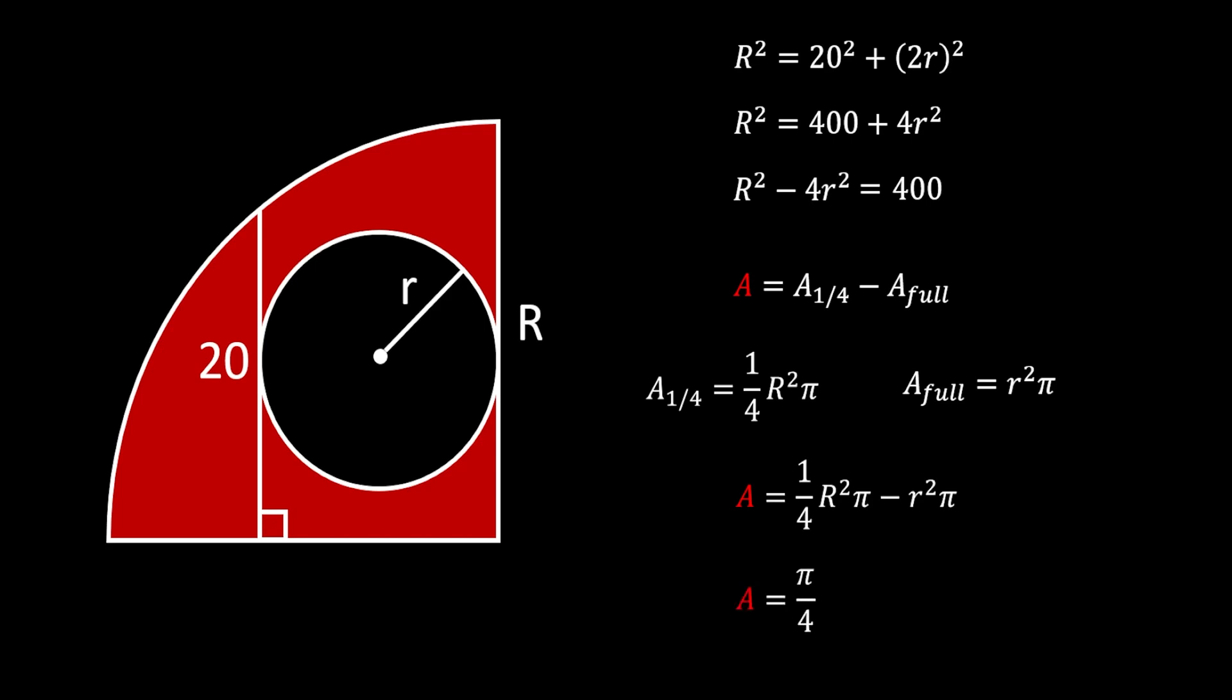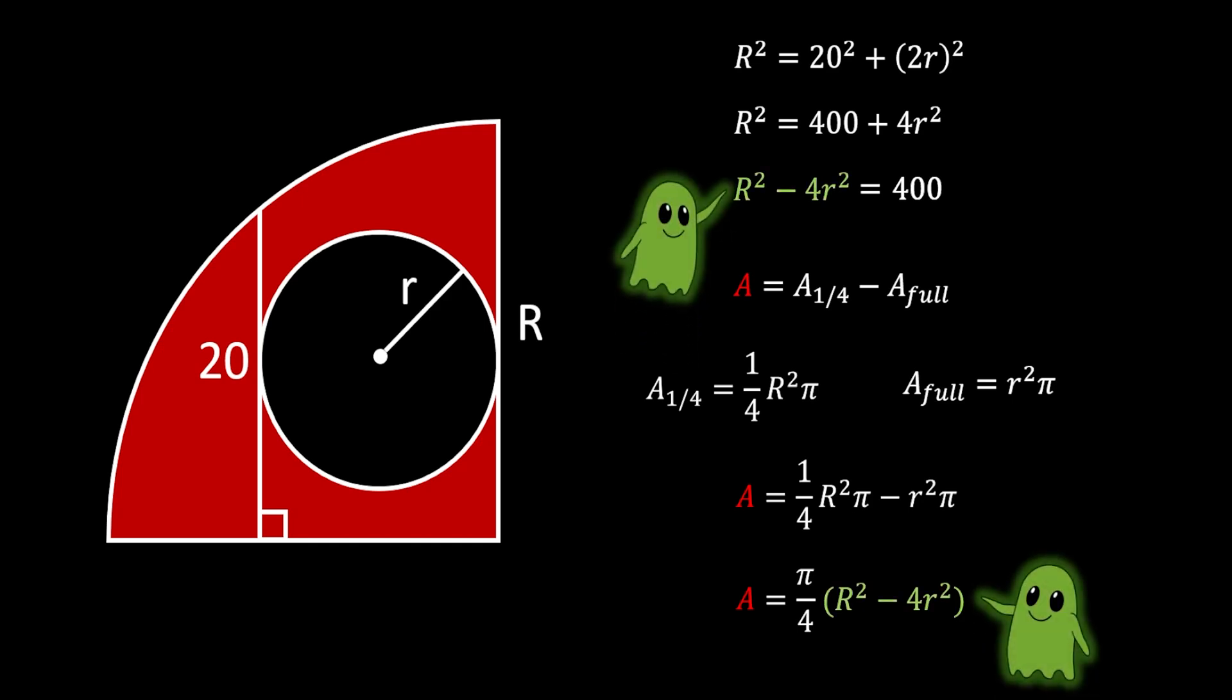Now we can take pi over 4 as a common factor and we will be left with big R squared minus 4 small r squared. But if you noticed we already got this section in our line number three and the value for this section is 400.